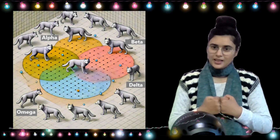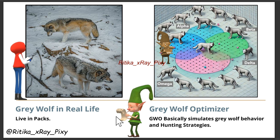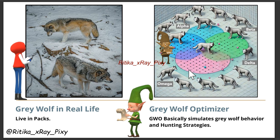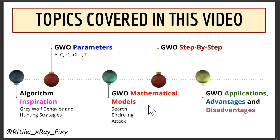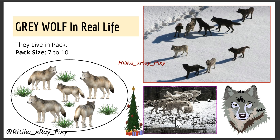Now we will cover the Grey Wolf Optimizer step by step using different examples. This algorithm is inspired by grey wolves' behavior — how they organize themselves and how they work together during hunting. First we will discuss the algorithm inspiration, then we will understand grey wolves' real life behavior, simulate different parameters used in this algorithm, and cover algorithm applications, advantages, and disadvantages. Grey wolf pack size is about seven to ten wolves.